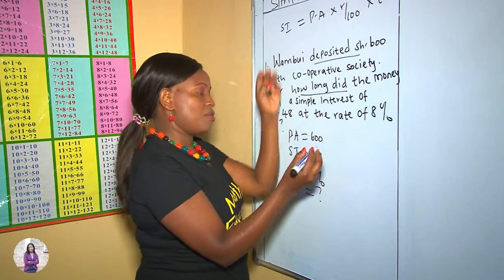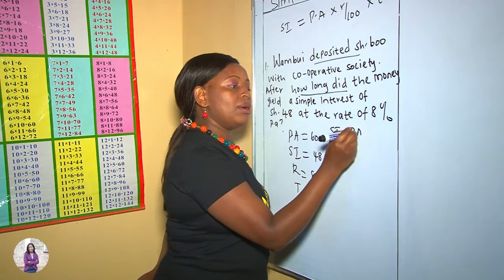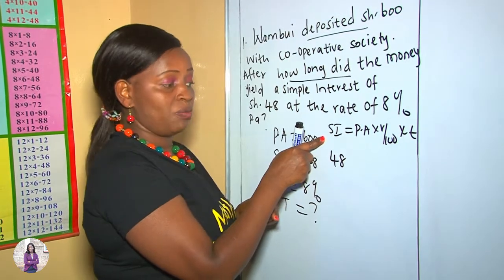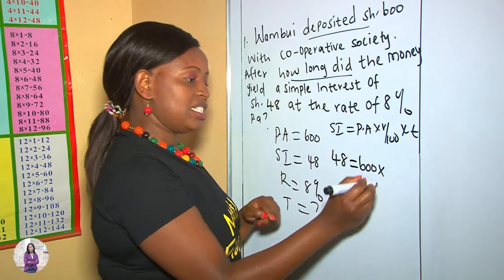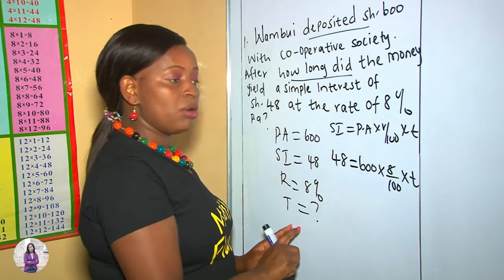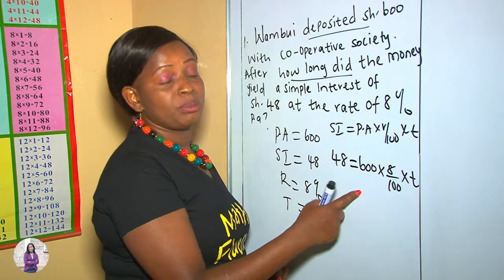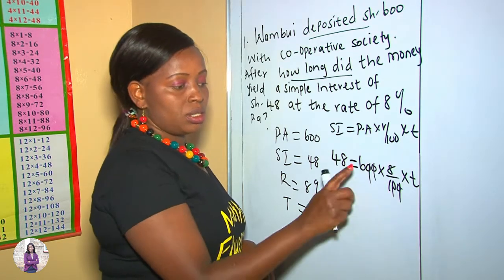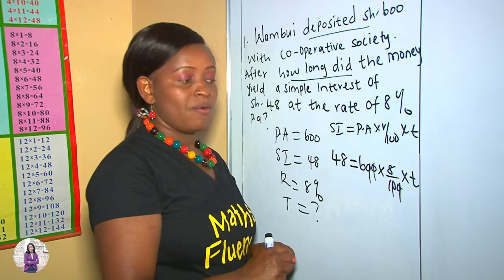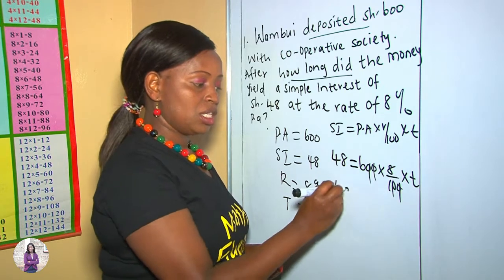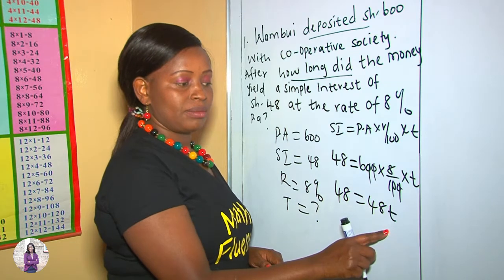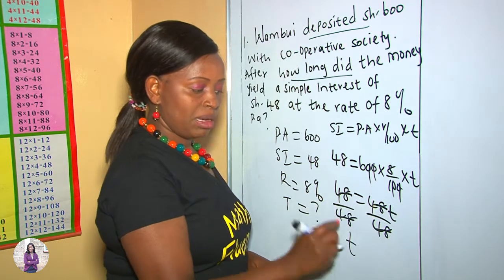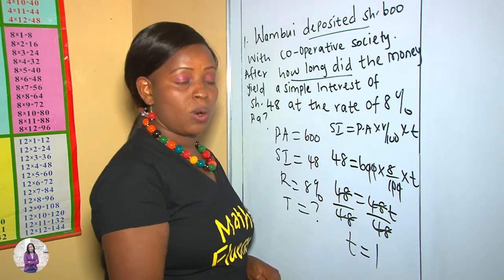This takes us back to the formula: SI = PA × rate/100 × time. Our SI is 48, our principal amount is 600, our rate is 8 over 100, but we don't know time — we are looking for it. Because of this unknown, we apply algebra. Simplifying: 0 goes with 0, 0 goes with 0. So 6 times 8 is 48, and 48 times t is 48t. So 48 = 48t. Dividing both sides by 48, we get t = 1.